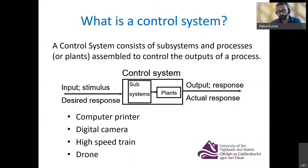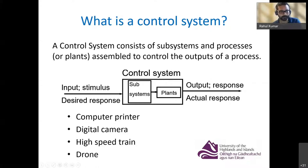You have so many examples of control systems around you. Basically, nowadays everything is automated. Some examples of a control system include your computer printer, digital cameras, high-speed trains, and even drones.